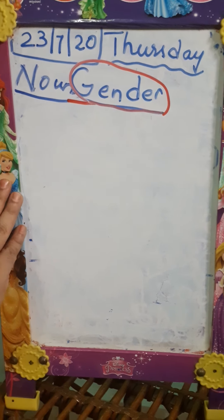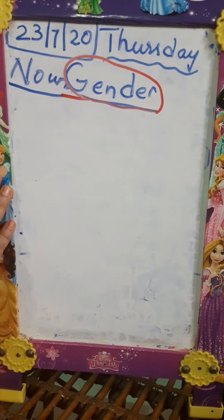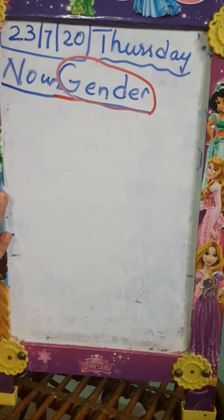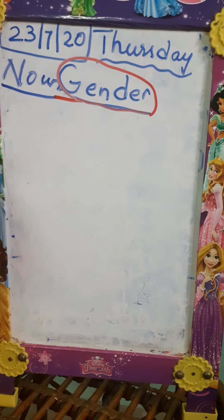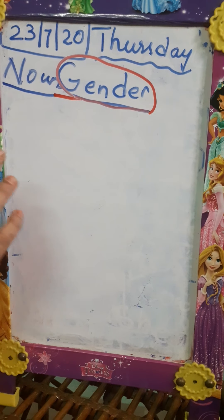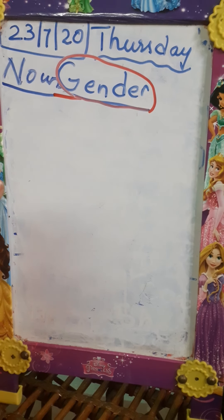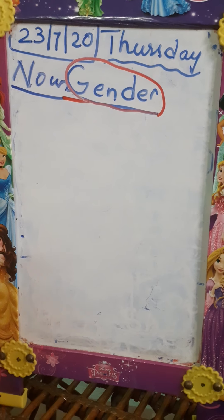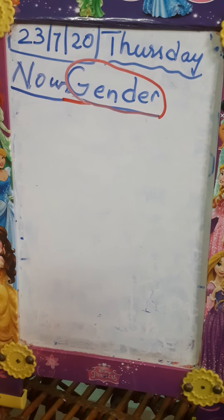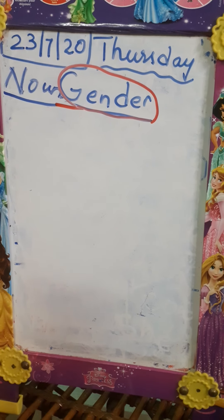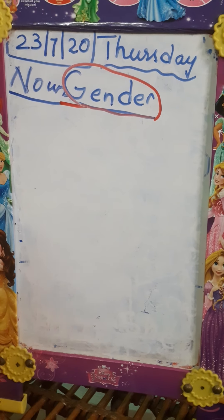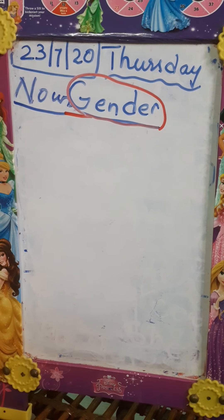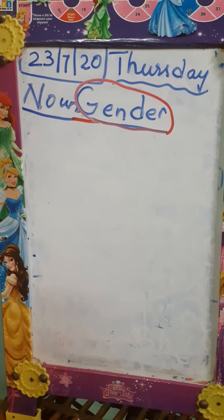In this class, we are learning genders. What is genders, children? Genders are — we see in animals or in persons, every person has a name and a gender also. An animal also has a gender.